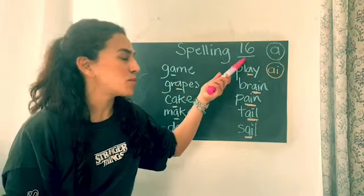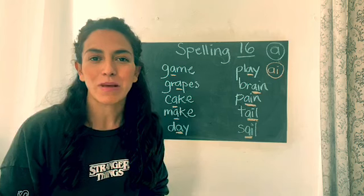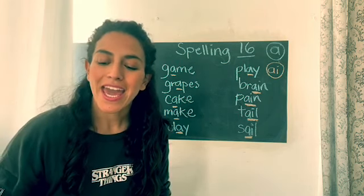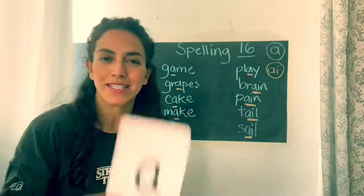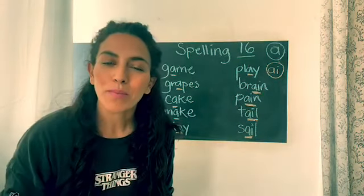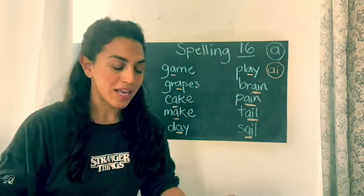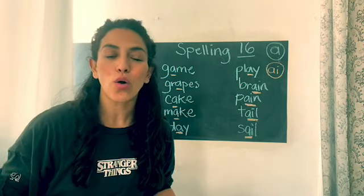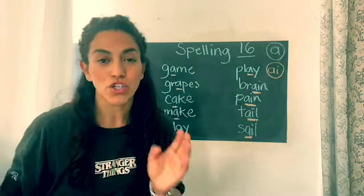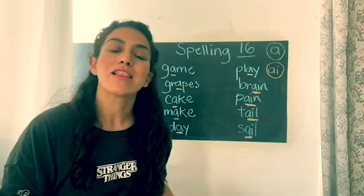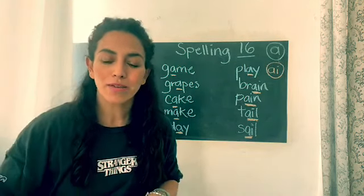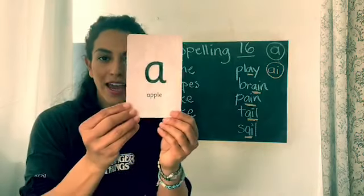We're going to do spelling number 16, okay? Spelling number 16 is about the A sound. This is the A sound. Remember the vowels — A, E, I, O and U — they have two sounds. They have a short sound and a long sound. So today we're going to study the long A sound.